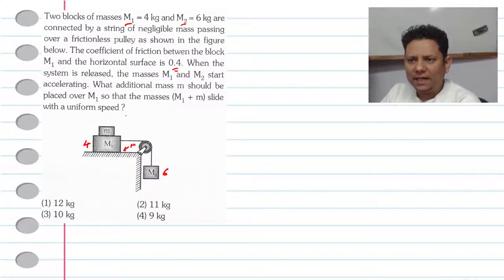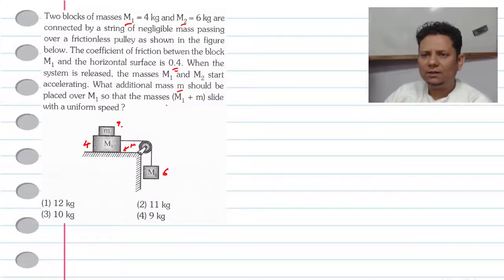What additional mass m should be placed over mass m1 so that masses m1 and m2 slide with uniform speed?